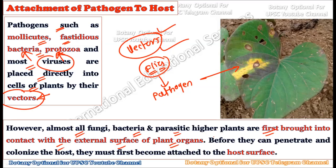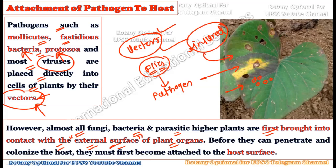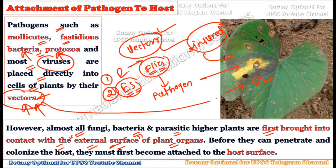However, in almost all fungi, bacteria, and parasitic higher plants, the pathogen first comes in contact with the external surface of a plant's organs. If the plant is not injured, the pathogen cannot directly enter the plant body. There are two conditions: if the plant is injured, the pathogen can enter directly; if the plant is healthy, it will land on the external surface only.